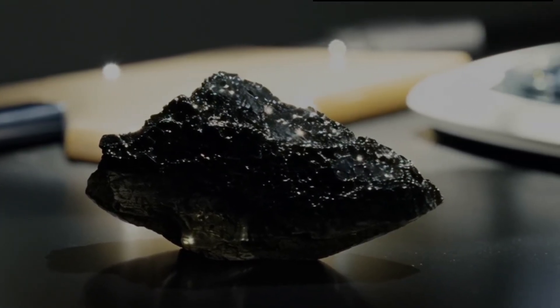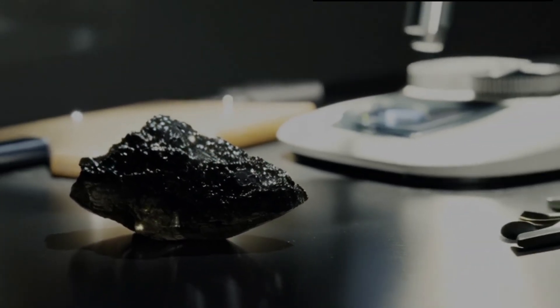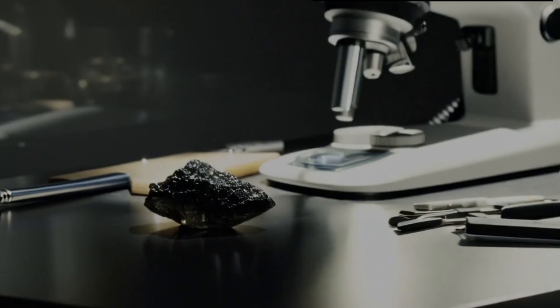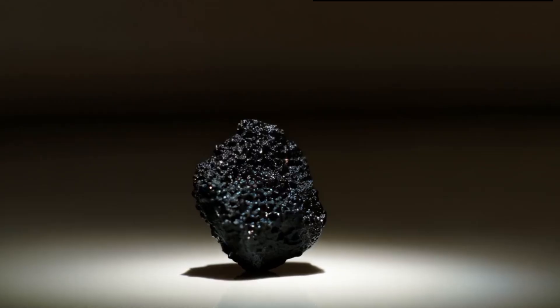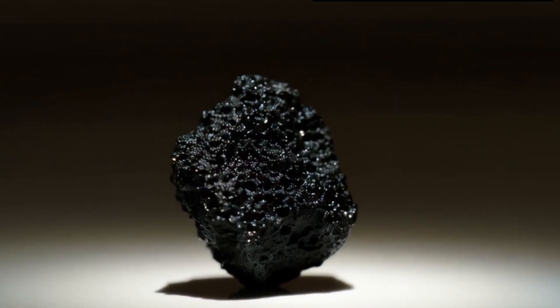Number six, light test. Shine a strong flashlight through the stone. Black diamonds usually do not let much light pass through, but under close inspection, you may notice faint translucent areas at the edges. If the stone is completely opaque with no sparkle, it might be another mineral.